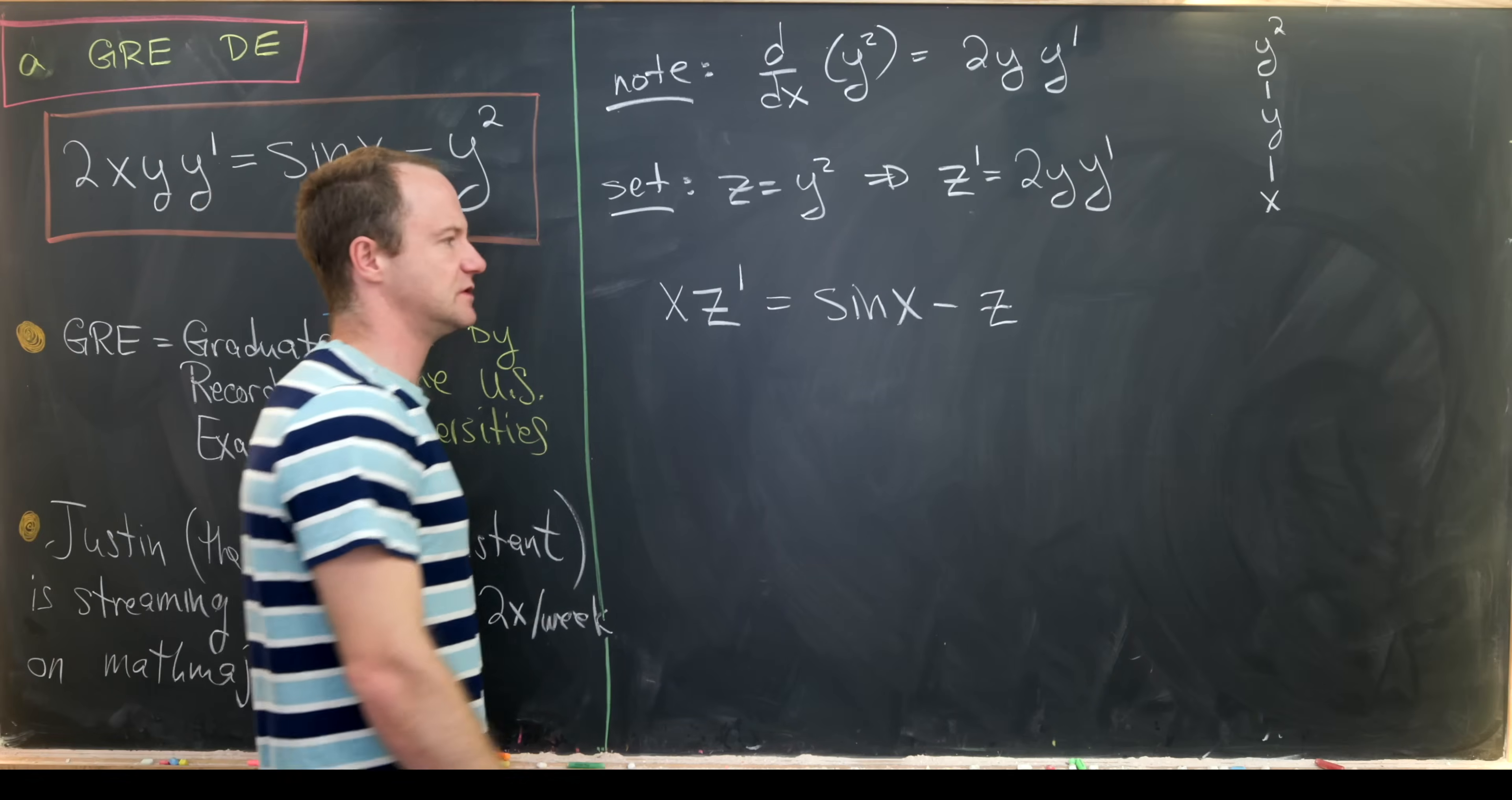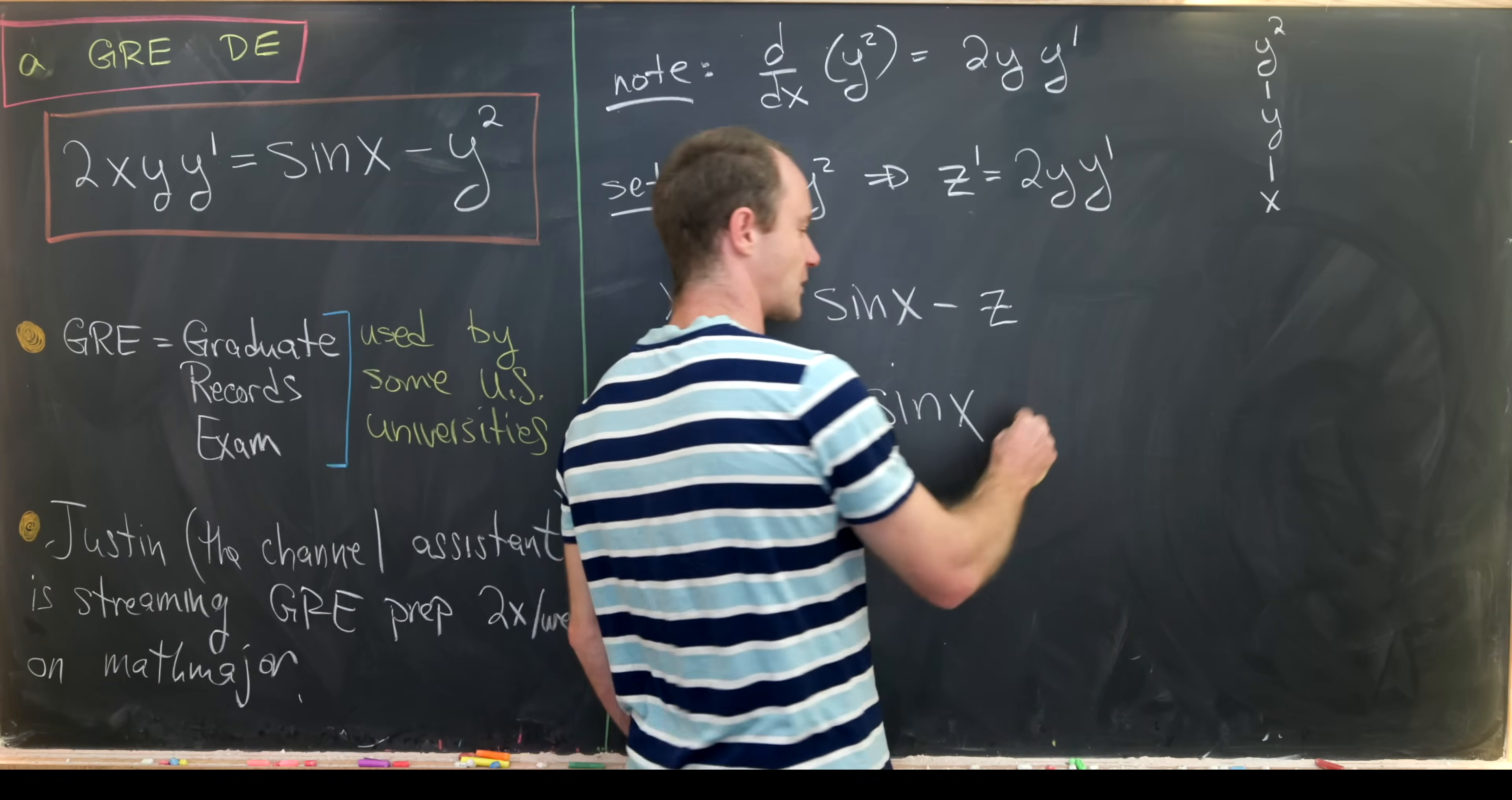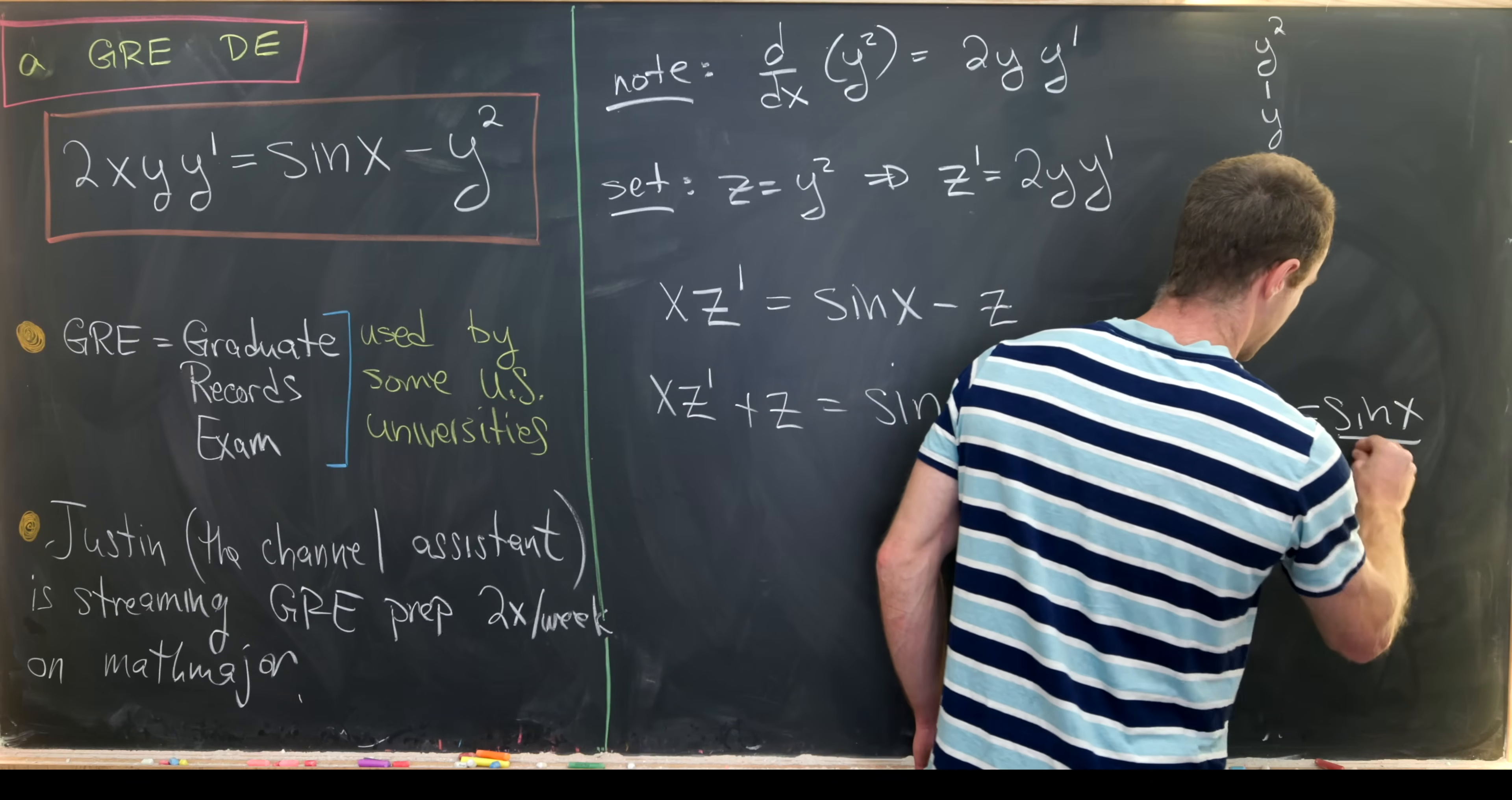Okay, so the next thing that I would do is maybe move this z over, that gives me x times z prime plus z equals sine of x. And then this is actually almost in the form of a first order linear differential equation that we have a formula to solve. Notice that we could write this as z prime plus 1 over x times z equals sine of x over x.